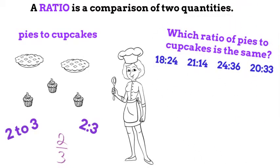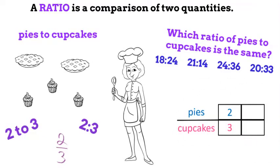Can you figure out which ratio of pies to cupcakes is the same? Let's use a graphic organizer. We'll start with 18 over 24.